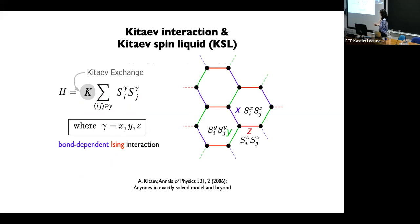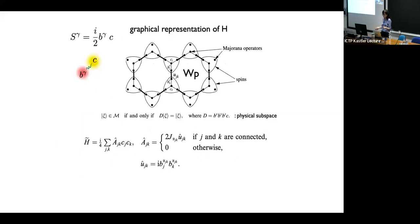The Kitaev interaction is nothing but bond-dependent Ising interactions with strength K: S^γ_i S^γ_j, where γ depends on the bond—so X bond has S^x S^x, Y bond has S^y S^y, Z bond has S^z S^z. The graphical representation of the Hamiltonian—these are all from Kitaev's original paper—is really a beautiful paper that I would strongly recommend. One can write the spin in terms of two Majorana fermions: b^γ and c Majorana fermions.